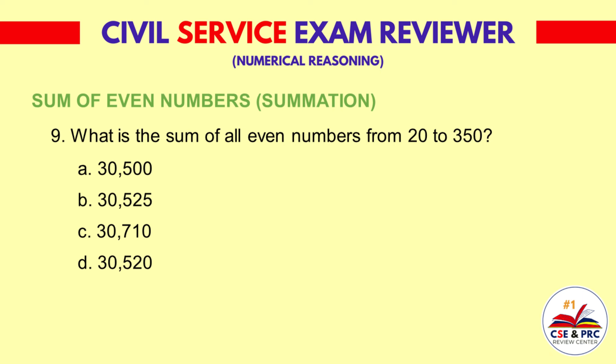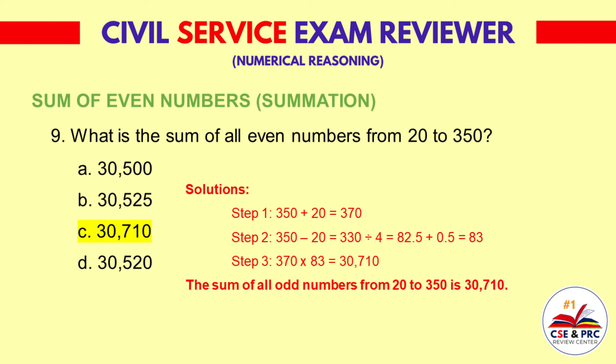Question 9: What is the sum of all even numbers from 20 to 350? a. 30,500  b. 30,525  c. 30,710  d. 30,520. The answer is c. 30,710.